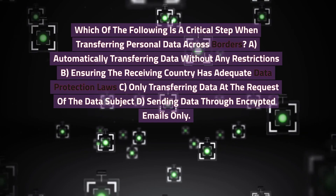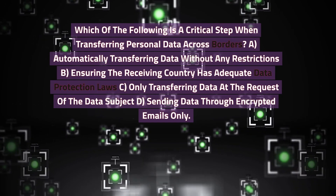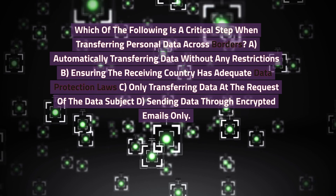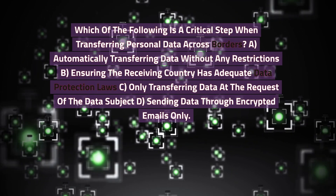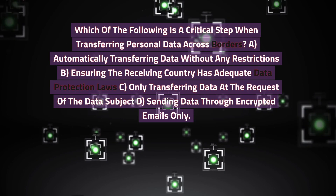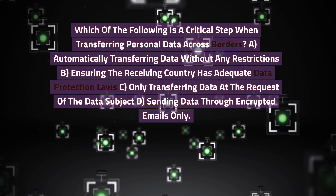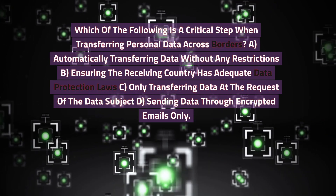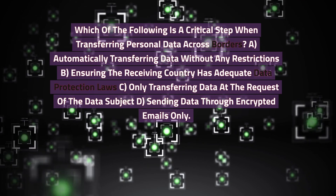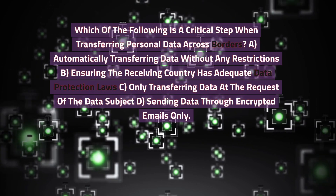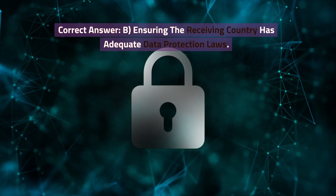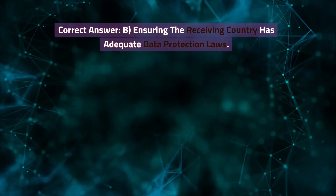Which of the following is a critical step when transferring personal data across borders? A. Automatically transferring data without any restrictions. B. Ensuring the receiving country has adequate data protection laws. C. Only transferring data at the request of the data subject. D. Sending data through encrypted emails only. Correct answer: B. Ensuring the receiving country has adequate data protection laws.